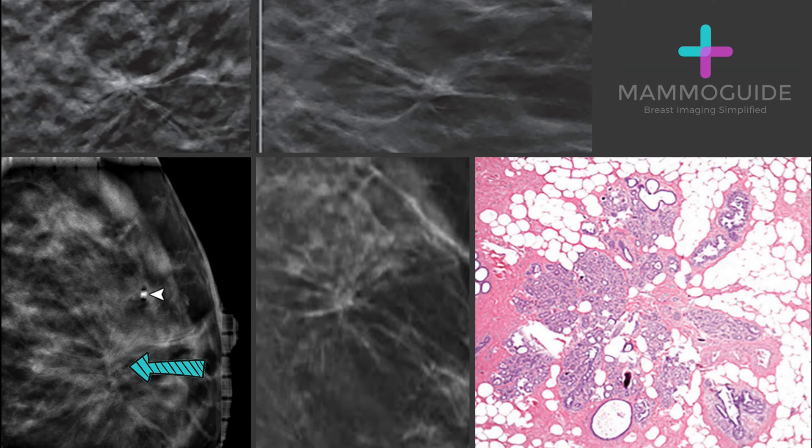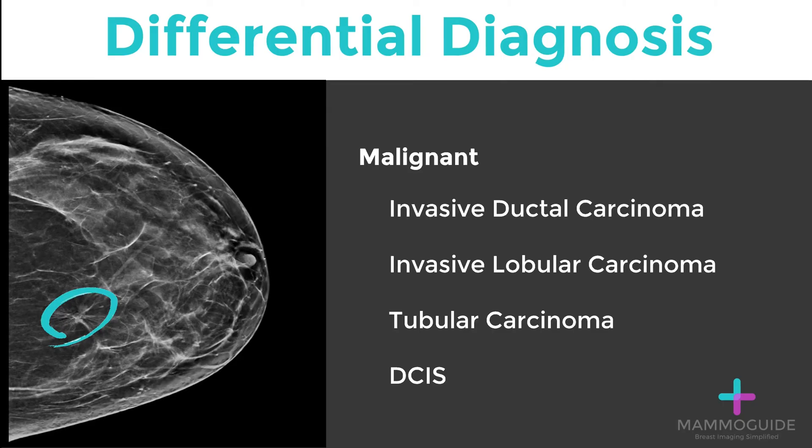What can cause this? There are several malignant causes for architectural distortion, the most common being invasive ductal carcinoma, as it is the most common form of breast cancer. Invasive lobular carcinoma also frequently presents as architectural distortion. A much more rare form of malignancy is tubular carcinoma, but this small lesion tends to present as architectural distortion.